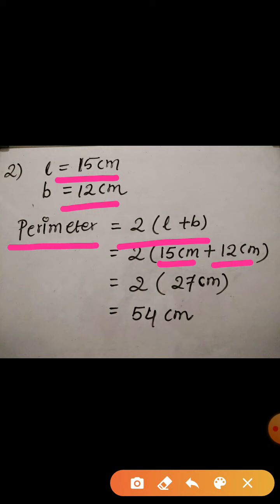Now here in this formula we substituted the value. Length is 15 and breadth is 12. Now 15 plus 12 is 27. So now it is 2 times 27 cm. And 2 into 27 is equal to 54. Hence the perimeter is 54 cm.